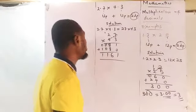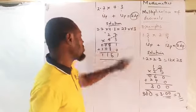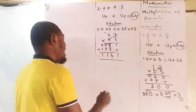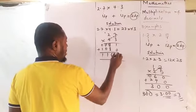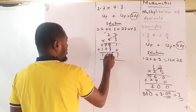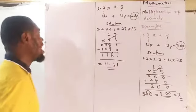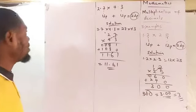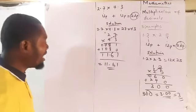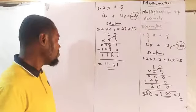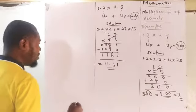Remember what they gave you — total decimal was 2 decimal places. So come down and count from the unit 2 numbers before the point: 1, 2 before the point. So your final answer is 11.61. If you multiply 2.7 times 4.3, your answer will be 11.61.